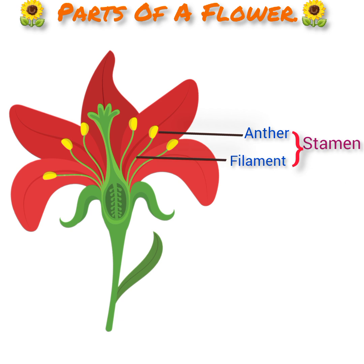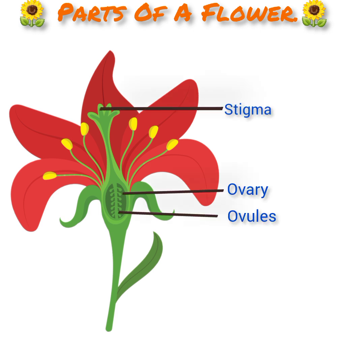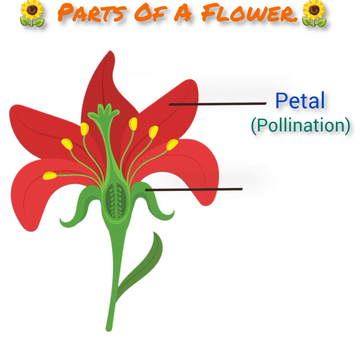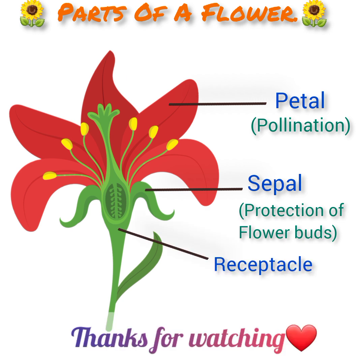The pistil is the female part of the flower, which is made up of the ovary, ovules, stigma, and style. Other parts of the flower include the petal, sepal, and receptacle.